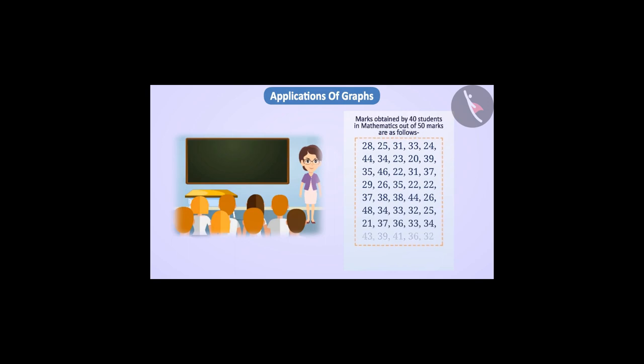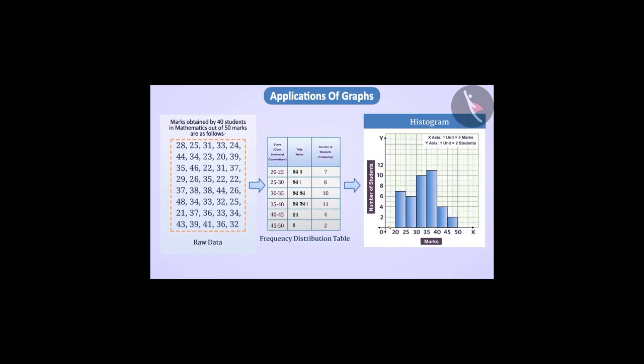To make it easier to understand and obtain information from raw data, we distribute them into different groups. This gives us the frequency distribution table. Histogram helps us to display this grouped data. In the histogram, the class intervals are represented by adjacent bars, and the frequency of the class interval is represented by the length of the bars. Keep in mind, the histogram does not have gaps between the bars because there are no gaps between the class intervals.